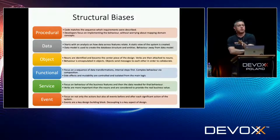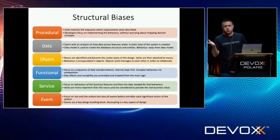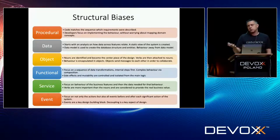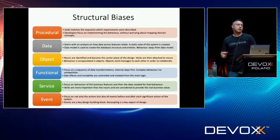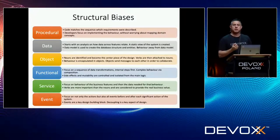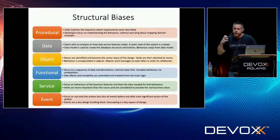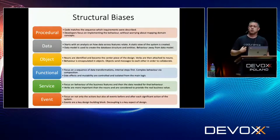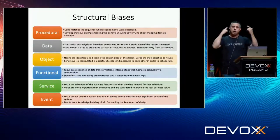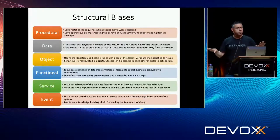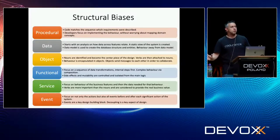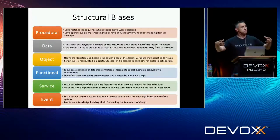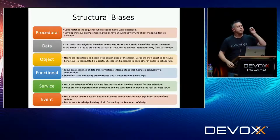The interesting thing is you can take any of those structural design styles and write any software with them — it will be a little bit harder or easier depending on what you're doing. But if you have a monolith, the structural design style you choose has a huge impact. For example, if you come from an object-oriented style and someone wrote the whole code base in a functional style, it won't be easy to read. Depending on how biased you are, you might reject it completely and say it's wrong — why is the behavior not with the data?